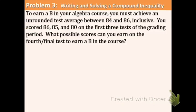Example three. To earn a B in your algebra course, you must achieve an unrounded test average between 84 and 86 inclusive. You scored 86, 85, and 80 on the first three tests. What possible scores can you earn on the last test to earn a B in the course? So you must get between an 84 and 86 inclusive. Remember, inclusive means including those values. So we're going to have a line underneath the symbol.